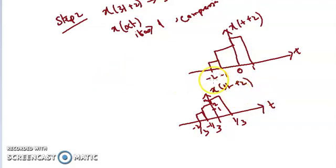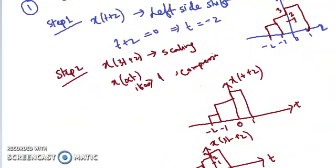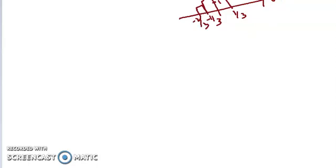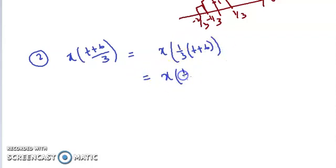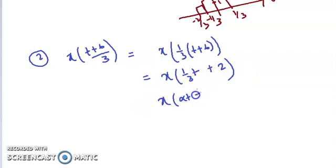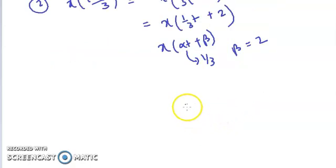The second question asks us to find X(T+6/3). We can rewrite X(T+6/3) as X(1/3 · (T+6)), which simplifies to X(1/3 · T + 2). This is in the standard format X(αT+β), where α = 1/3 and β = 2.